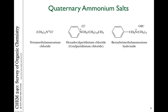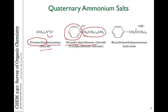Quaternary ammonium salts are named using inorganic-style nomenclature. Ammonium chloride is the salt for NH4+ Cl−. With four methyl groups, this is tetramethylammonium chloride. Another example is hexadecylpyridinium chloride — pyridinium is the parent molecule with a 16-carbon chain attached. And benzyltrimethylammonium hydroxide uses benzyl as one of the four substituents on the nitrogen.